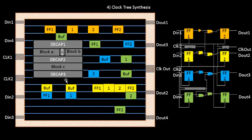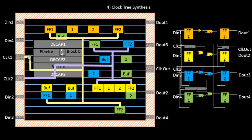A detailed lecture on clock tree synthesis is available in a separate section. Briefly, clock 1 is expected to reach flip-flop 1 and flip-flop 2 at the same time — that is the skew requirement. If the clock doesn't arrive at the same time at both flip-flops, there will be skew leading to timing violations. In clock tree synthesis, we not only route the clock in a specific fashion but also add buffers along the path.